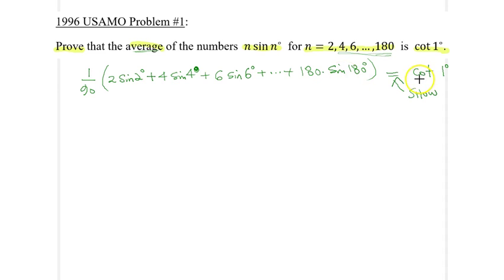In order to do that, and remembering that cotangent 1 is simply cosine 1 over sine 1, I will actually multiply both sides of this expression by sine 1, so therefore it will become the following format. So 1 over 90 times 2 times sine 2 degrees times sine 1, remember I'm multiplying both sides of this expression by sine 1, 1 degree, and so on.